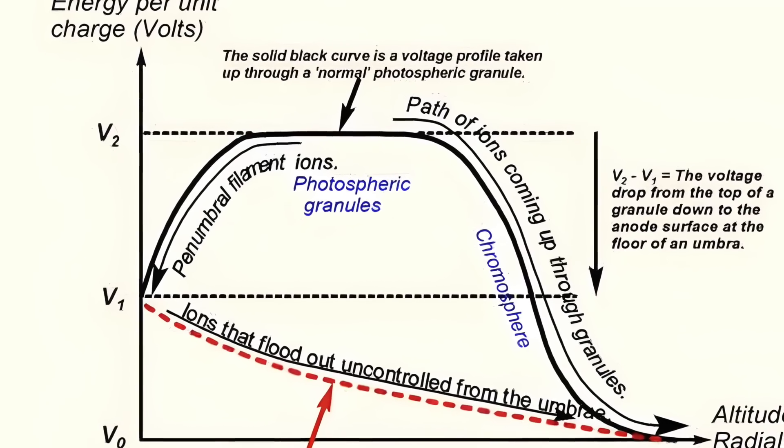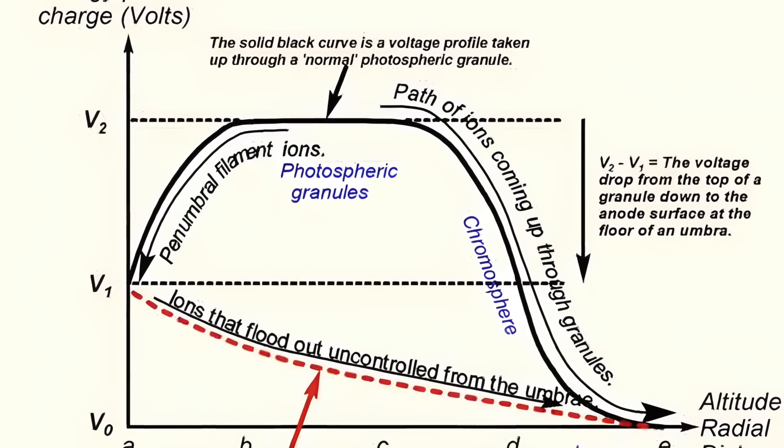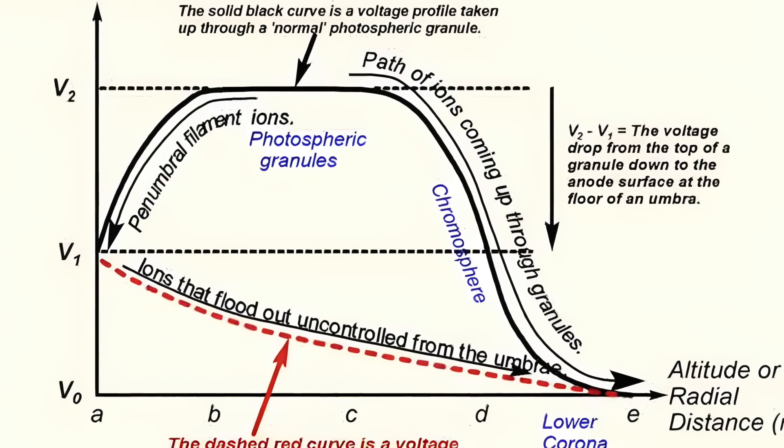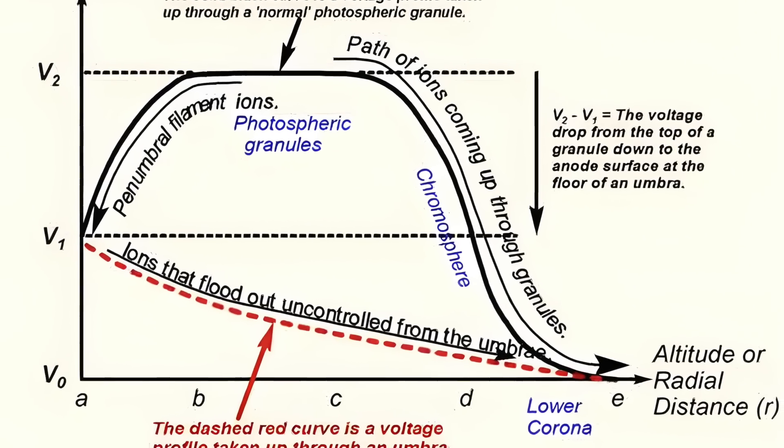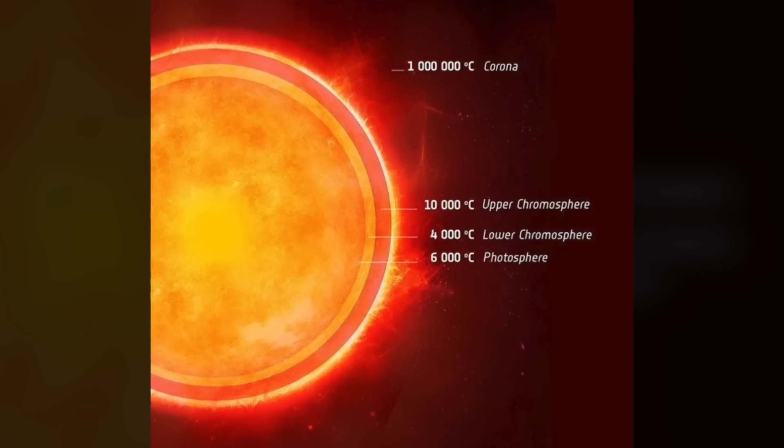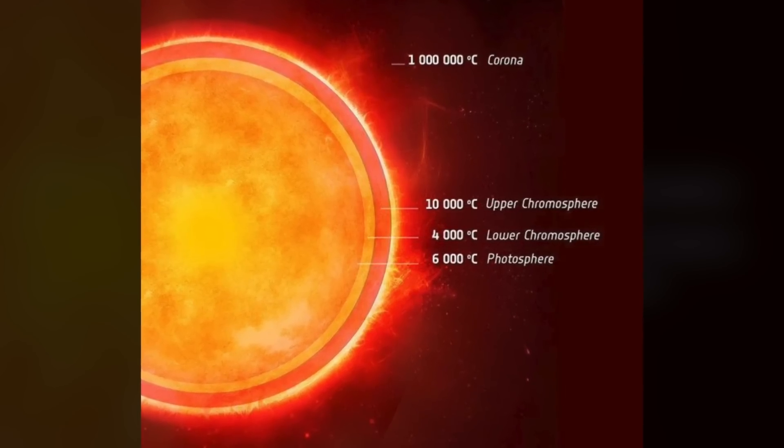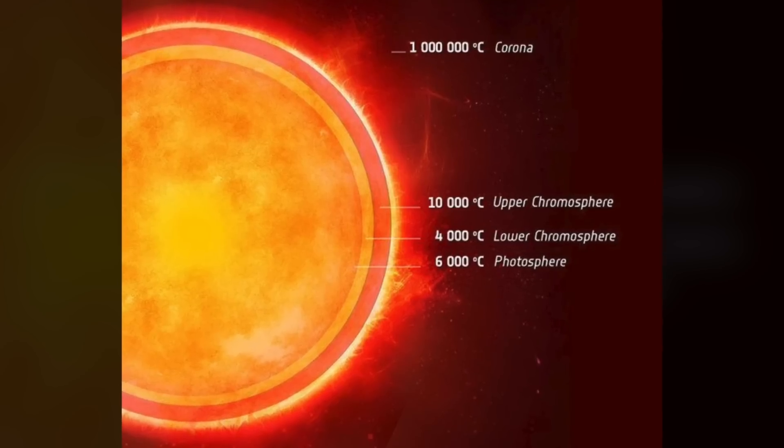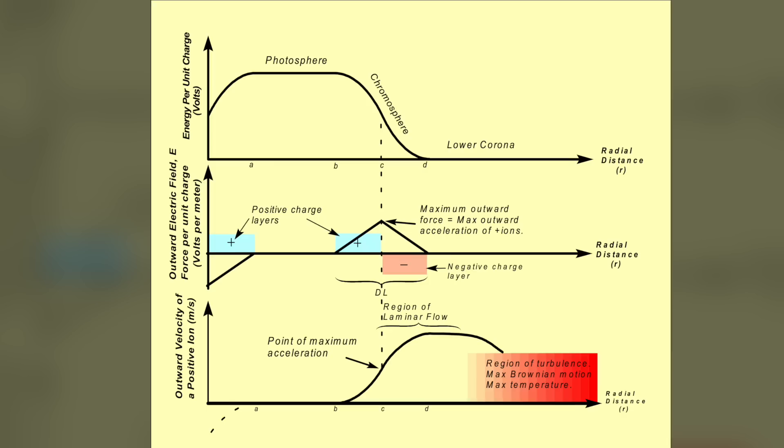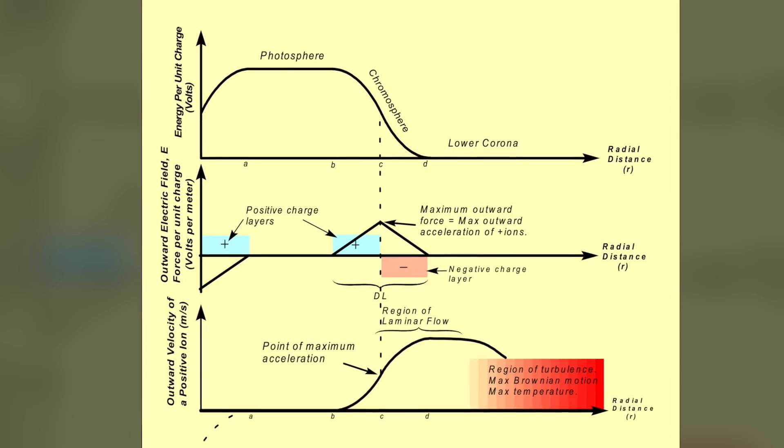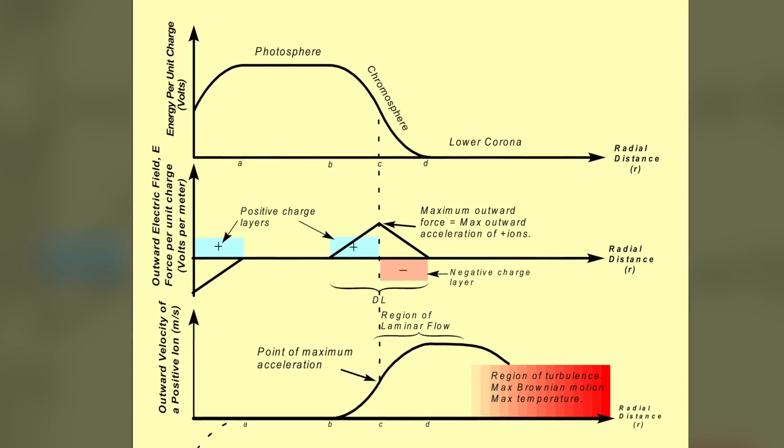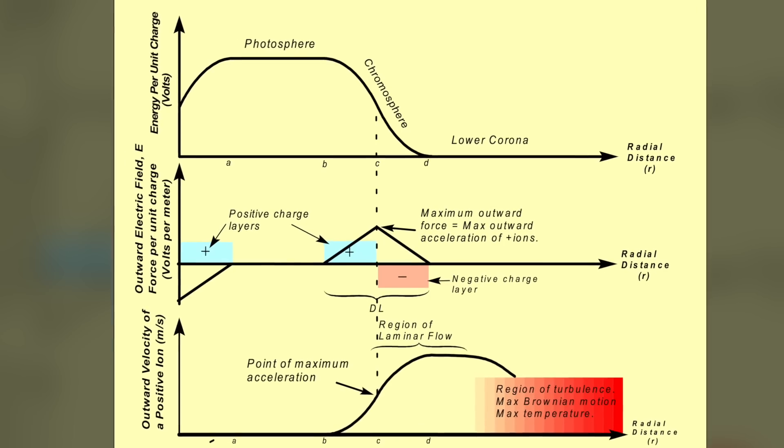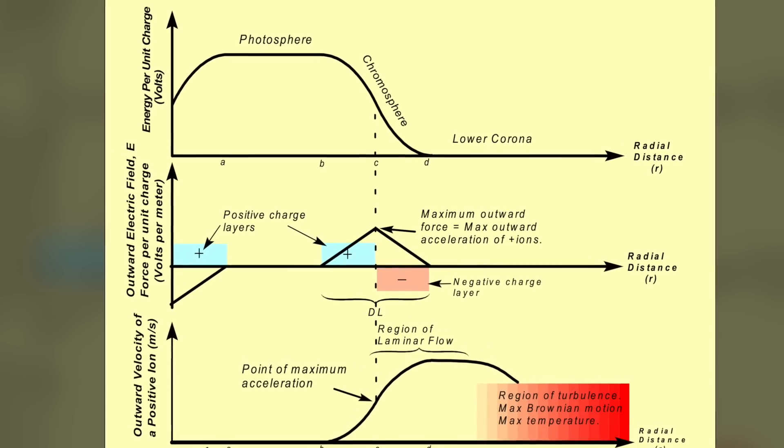Fifth, in the electric sun model, the turbulence of the fast wind ions is caused by their falling through this high voltage drop, and that explains the extreme temperature of the lower corona which has baffled astronomers for decades. Sixth and final, the electric sun model explains the fluctuations in the volume, that is to say the quantity of material in the fast solar wind, and how it once was cut off for more than a day.